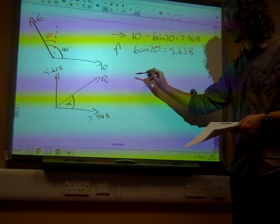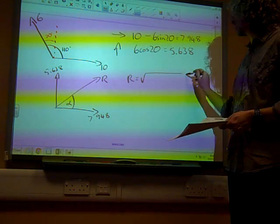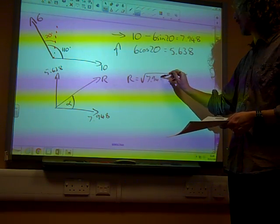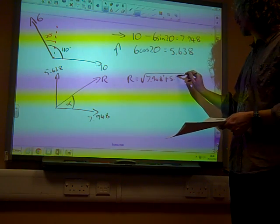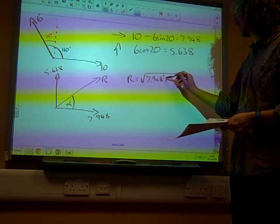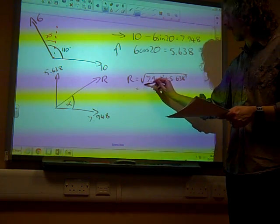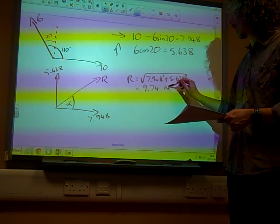So, using Pythagoras' theorem, R is the square root of 7.948 squared plus 5.638 squared. So, it gives me R is 9.74 newtons.